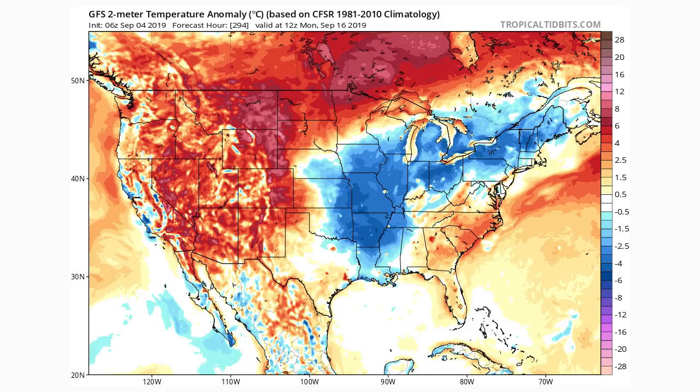Moving to Monday, September 16th, that trough shifts a little eastward — which is what I expect to see throughout September: cooldowns lingering in the central US then weakening and heading east. The western US is warming back up significantly by the 16th, so there will be a brief cooldown out west before it warms again by mid-month. The southeastern ridge is still in place, with Florida up through Virginia experiencing above-average temperatures, consistent with my September forecast.